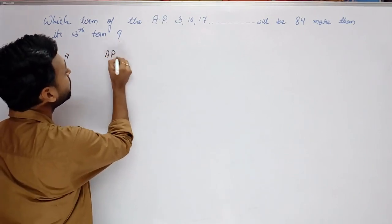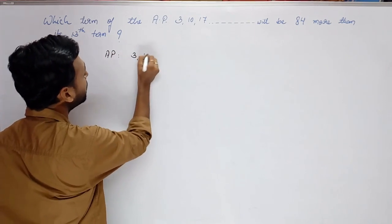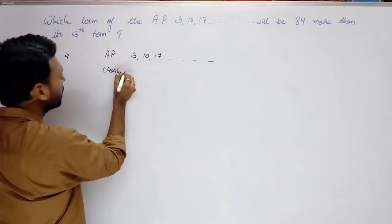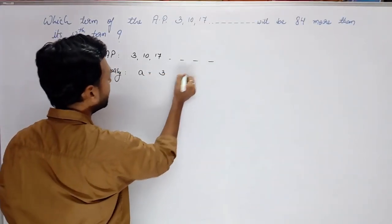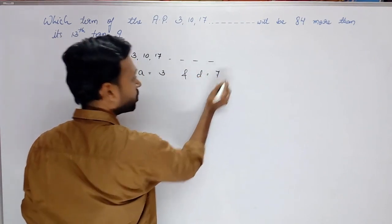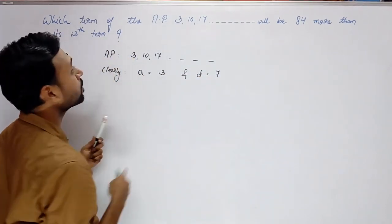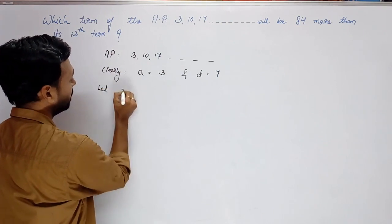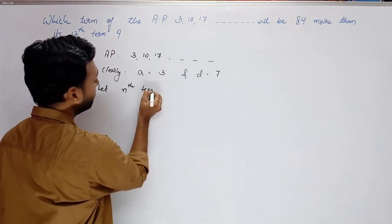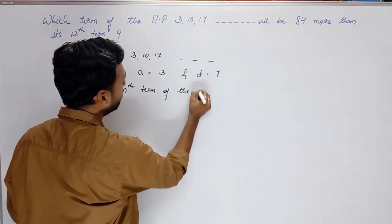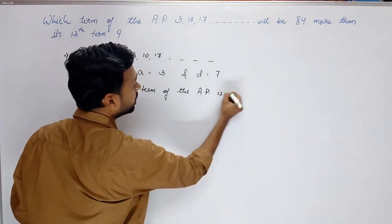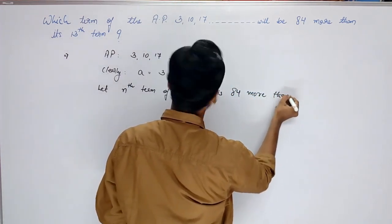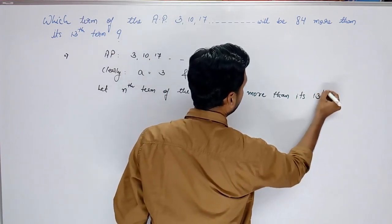AP kya de rakhi hai — 3, 10, 17, dot dot dot. Clearly a is 3 and d is 7. Now, which term of the AP is 84 more than its 13th term?